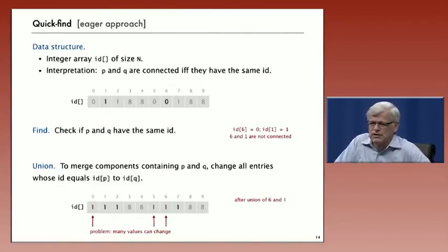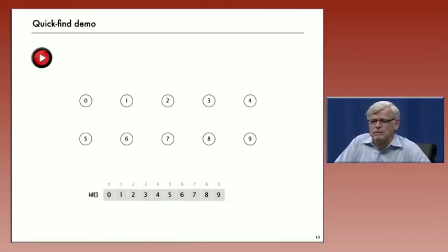If we're going to union 6 and 1, then we have to change entries 0, 5, and 6—everybody in the same connected component as 6—from 0 to 1. This is a bit of a problem when we have a huge number of objects because there's a lot of values that can change. But still it's easy to implement, so that'll be our starting point.